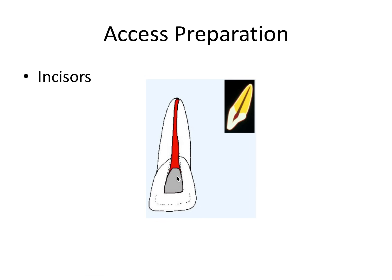The triangular shape ensures removal of the pulp horns through the de-roofing process. Having this wider coronal portion allows you to remove all of the badly inflamed or necrotic pulp tissue at the pulp horns, because we don't want to leave behind any bacteria. A second reason is that it helps preserve the marginal ridges, which are crucial to the tooth's strength. Third, it helps attain straight-line access from the access opening to the orifice to the apex.